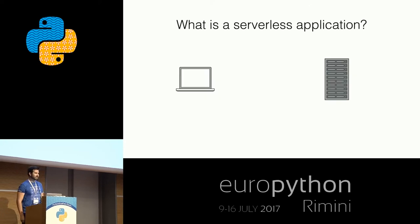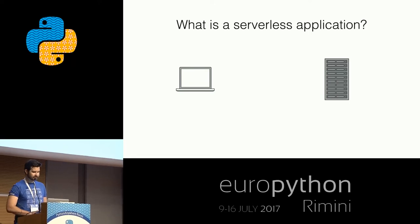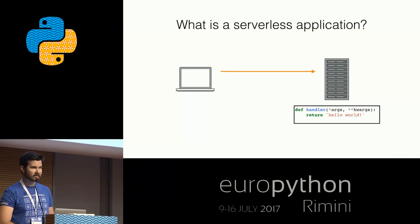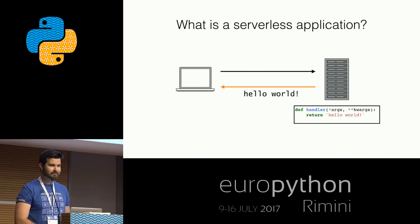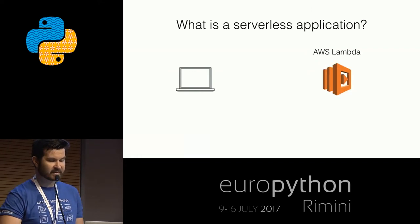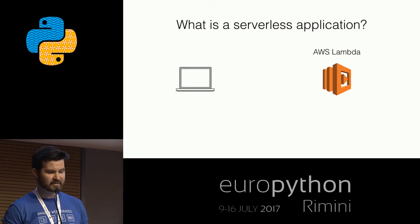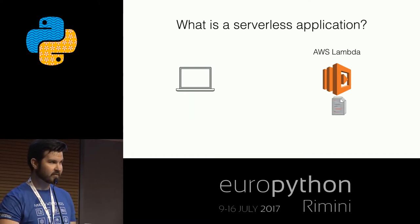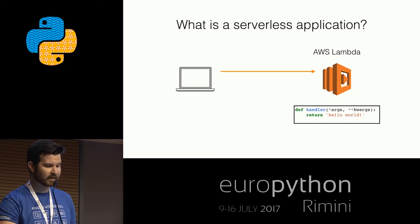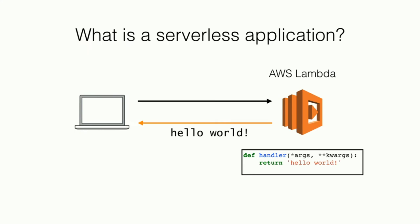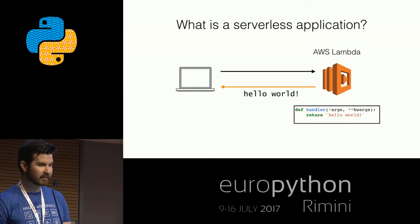So now let me talk about what exactly a serverless application is. Here we have a client and a server with a simple hello world function. When the client sends a request, the server runs the code and replies. With a serverless application, all of that gets replaced by a service such as AWS Lambda. You upload your code to AWS Lambda, and when you make a request it executes that code and returns the response. The key part is you don't own the server — it's all handled by AWS Lambda, which handles scaling for you as well.